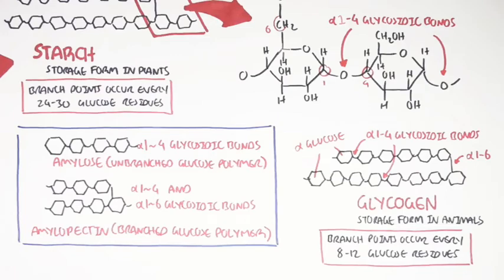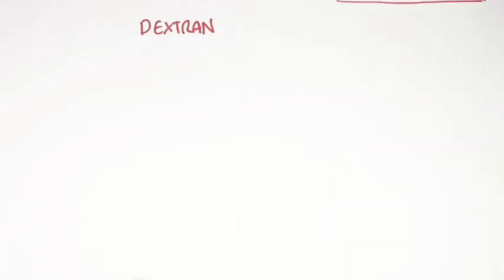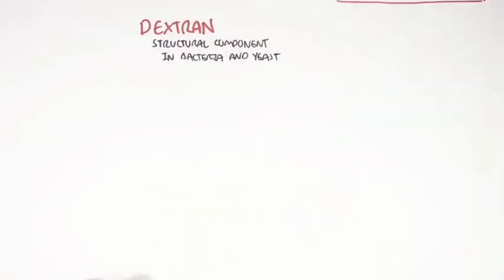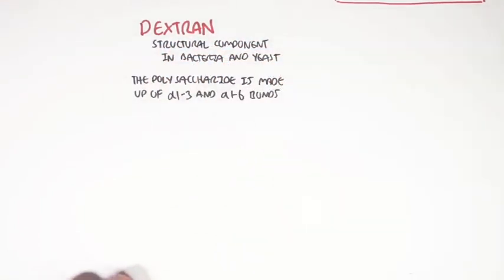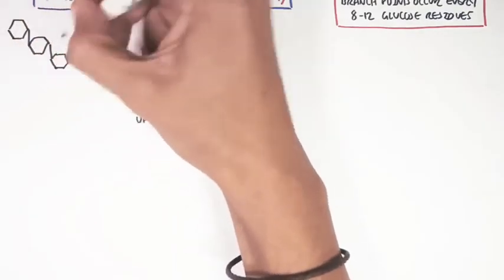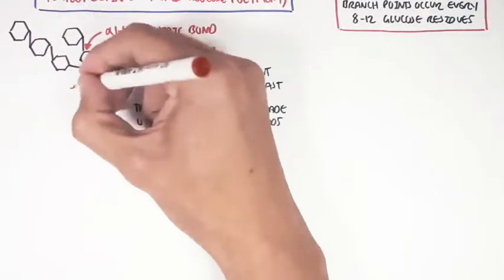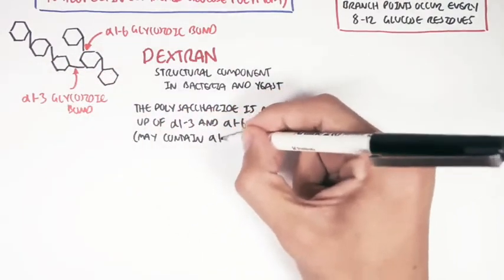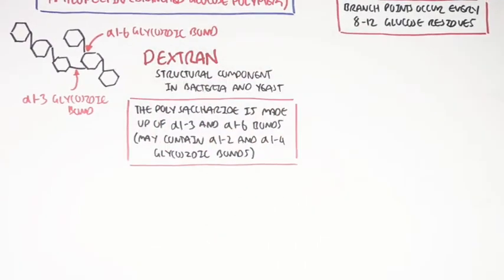Another type of polysaccharide is dextrans. Dextrans are structural components in bacteria and yeast. These polysaccharides are made up of alpha-1,3 and alpha-1,6 glycosidic bonds between glucose units. However, dextrans can also contain alpha-1,2 and alpha-1,4 glycosidic bonds.